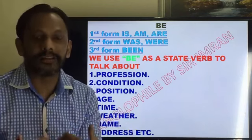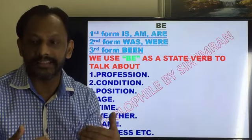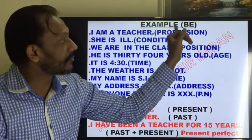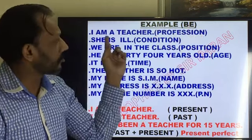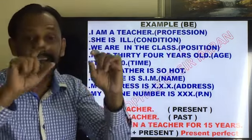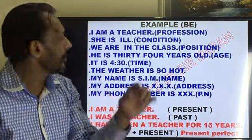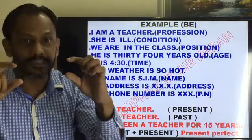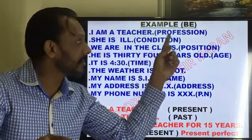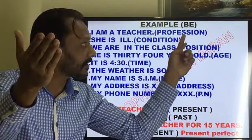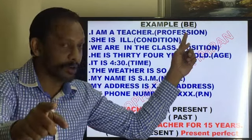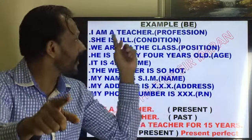Here are some examples. We are learning be. If I talk about profession — as I told you, be talks about profession, and the first form of be is is/am/are, which talks about the present. 'I am a teacher.' What is 'teacher' here? It is a profession. When we talk about profession, we use the be word. Be means is/am/are. This 'am' here is a state verb — it is not a helping verb.